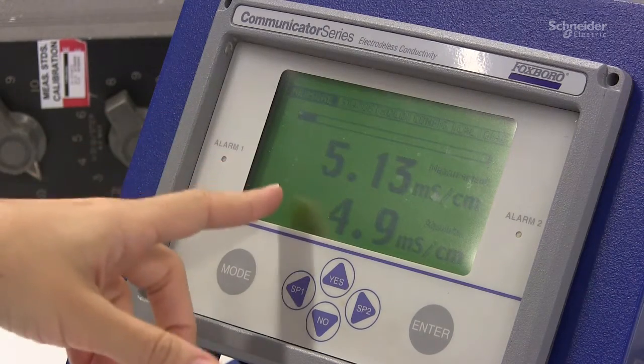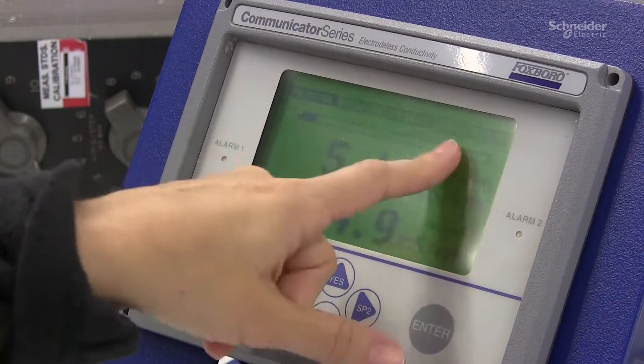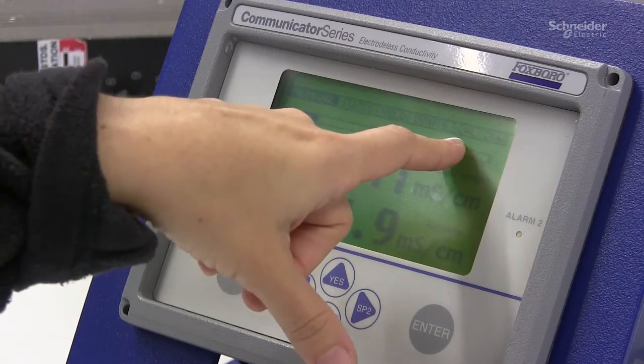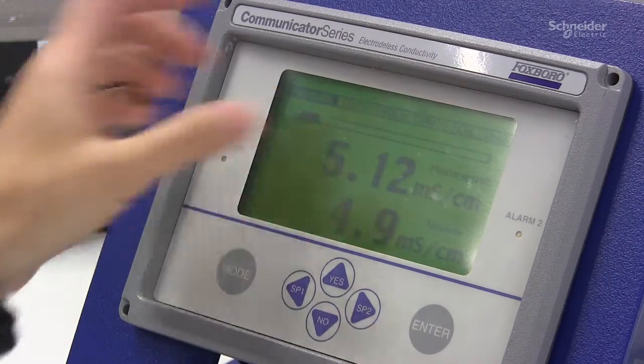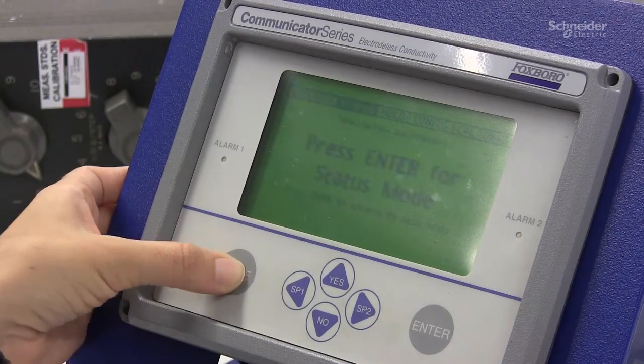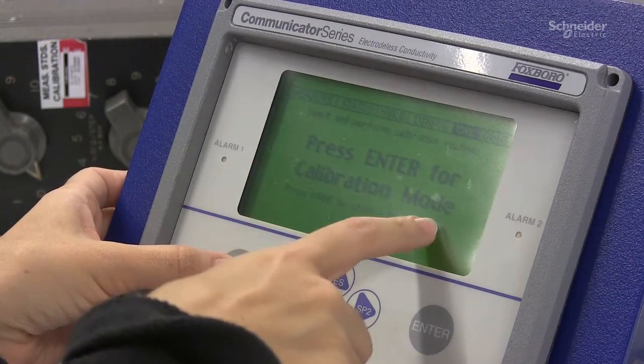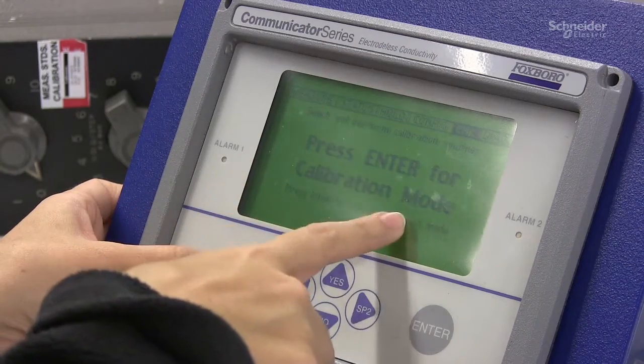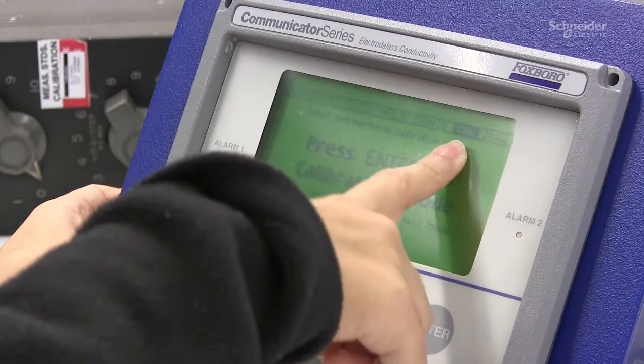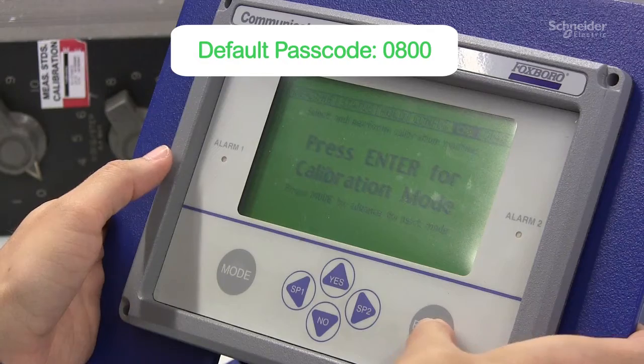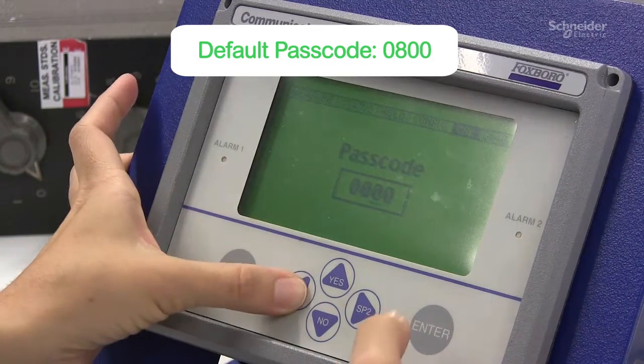The first thing you need to do is navigate to the calibration menu that is called CAL. So press the mode key until it says press enter for calibration mode and here the CAL is highlighted, press enter, enter the passcode.